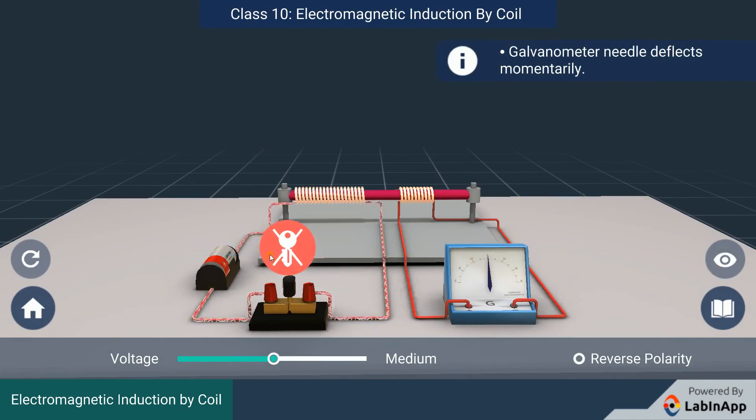Disconnect the plug key and observe. We can see that the needle of the galvanometer deflected again momentarily but to the opposite side.